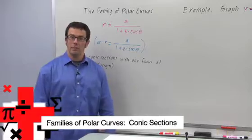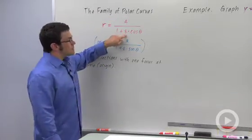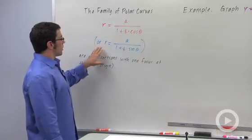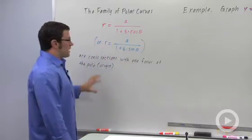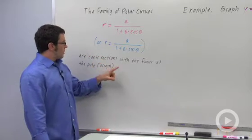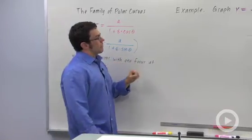Let's take a look at one final family of polar curves: r equals a over 1 plus epsilon cosine theta, or r equals a over 1 plus epsilon sine theta. These are the conic sections with one focus at the pole or origin. And let's graph one of these right now.